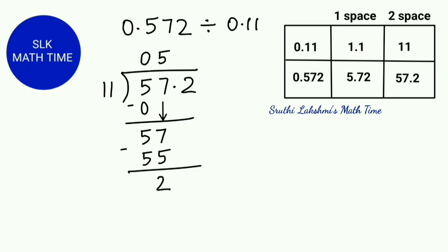Next, we bring down the 2. But remember, until we are done with this division problem, ignore the decimal point. So next we see 11 times what equals 22? 11 times 2 equals 22. So 22 minus 22 is 0.